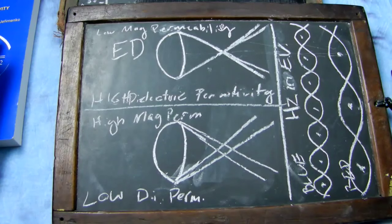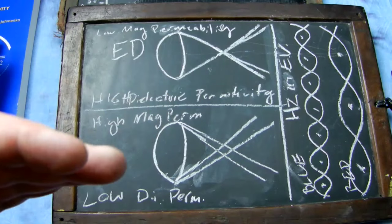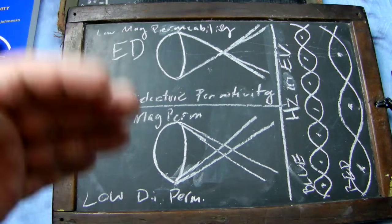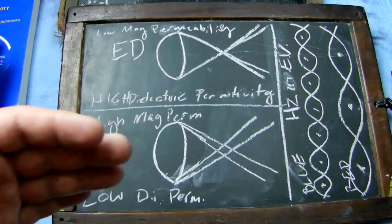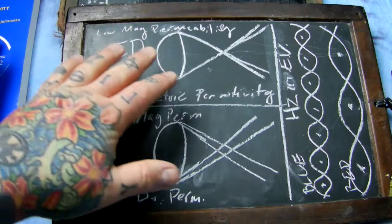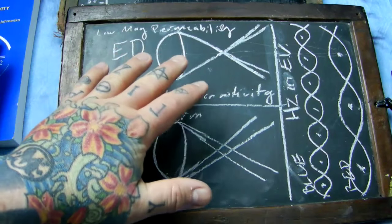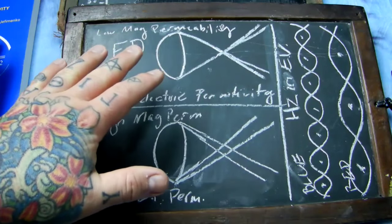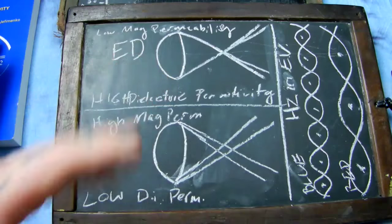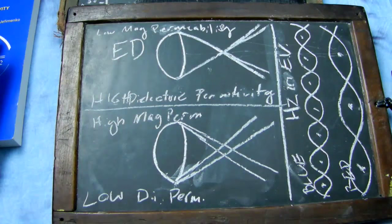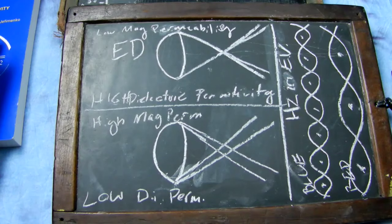There are also no lens designers that know anything about field theory. They know everything about indexes of refraction regarding glass and various compounds — they've got a secret formula, Nikon and everyone does for their own ED glass — but none of the people who design lenses know anything about field theory. There is another parameter of lens properties that induces — whether in film or a digital sensor — another property into a photograph.